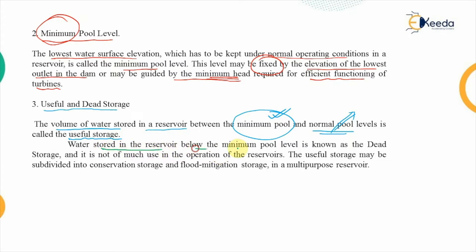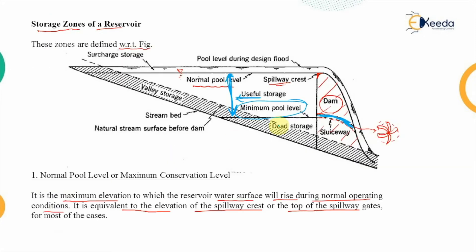The water stored below the minimum pool level is called dead storage, because we cannot use that water for daily needs, irrigation, or efficient functioning of the reservoir. The useful storage between the minimum pool level and the normal pool level is further subdivided into conservation storage and flood mitigation storage when we are talking about a multi-purpose reservoir.